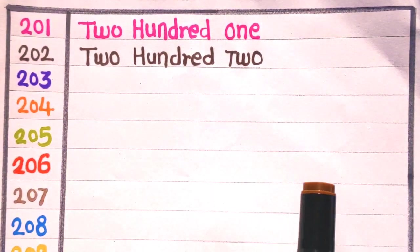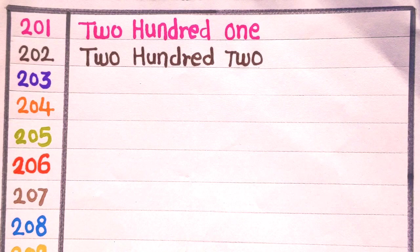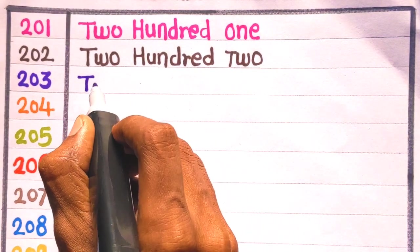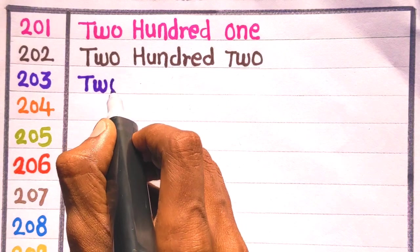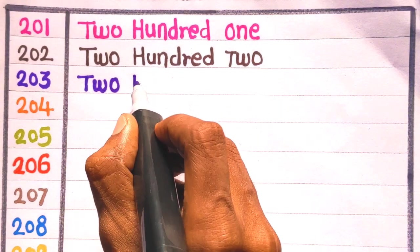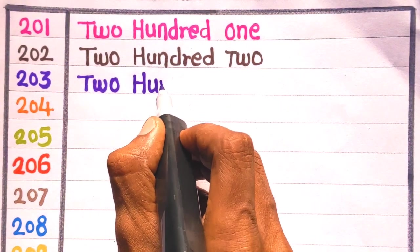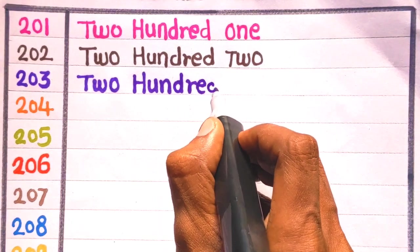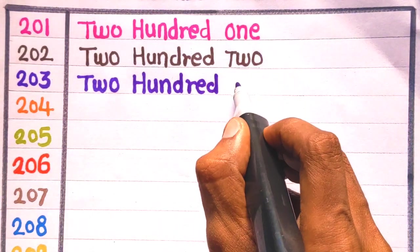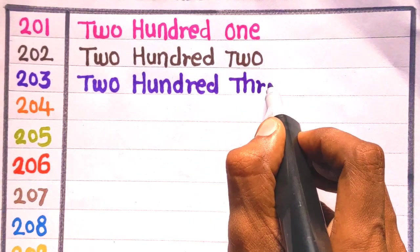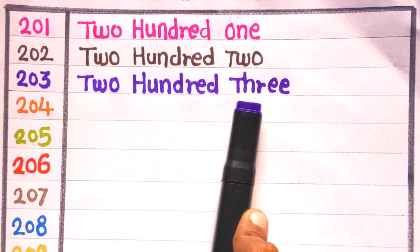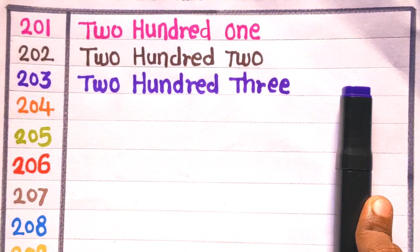Next is 203. E is 203. T, W, O, 2, H, U, N, D, R, E, D, 100, 3, T, H, R, E, E, 3, 203. With the violet color.